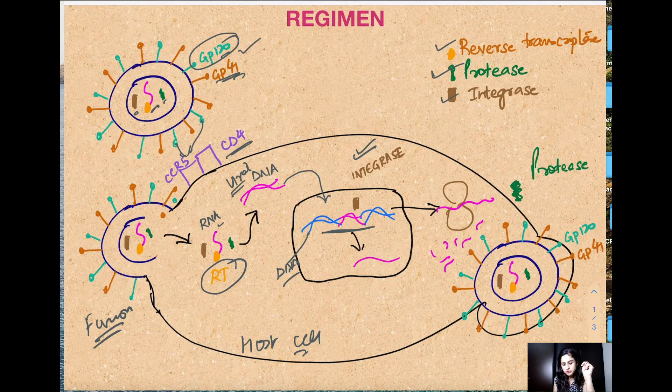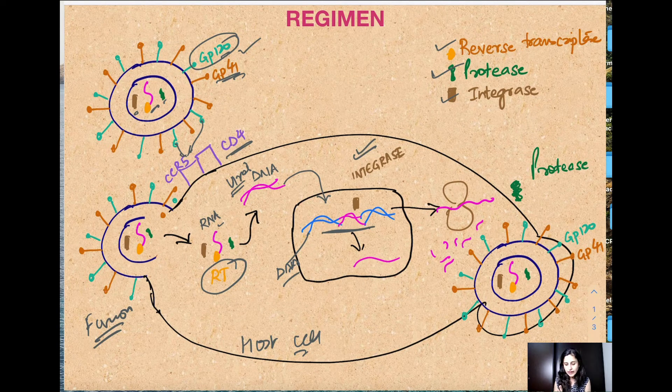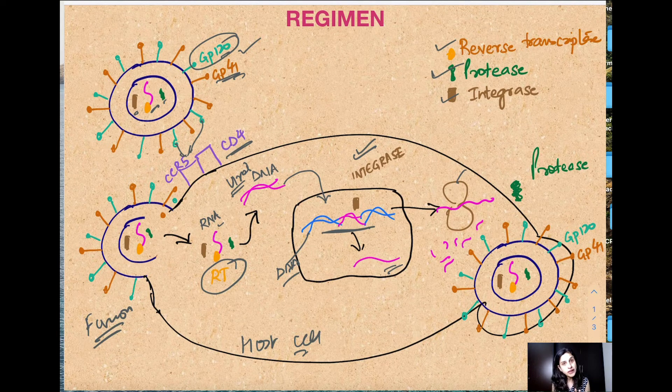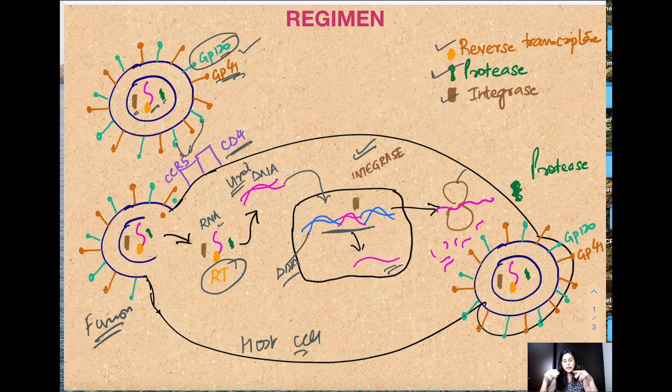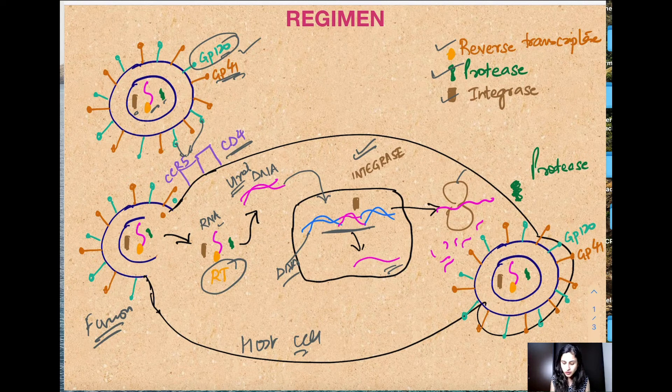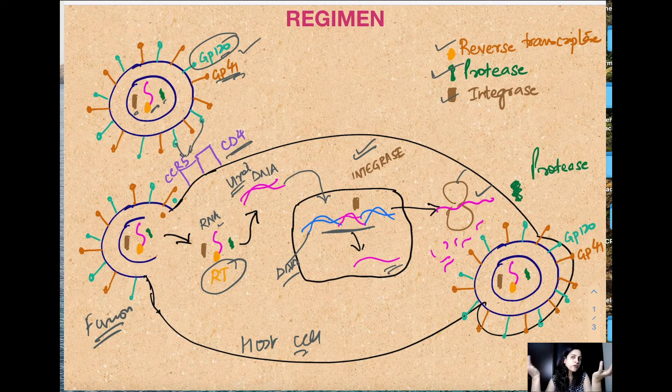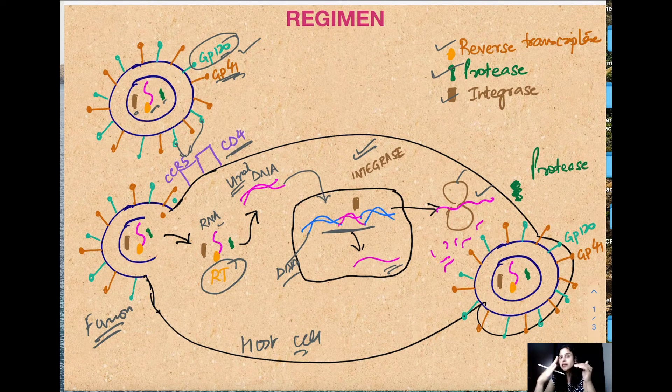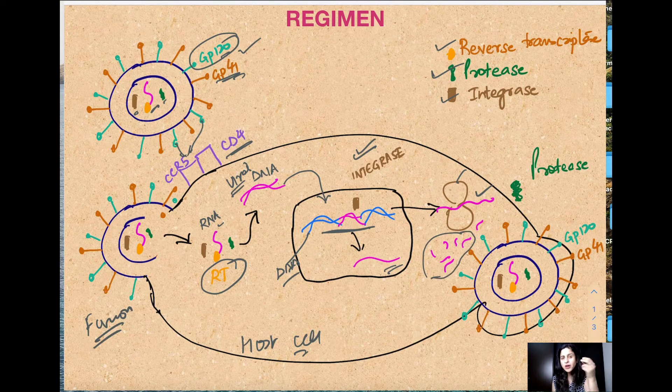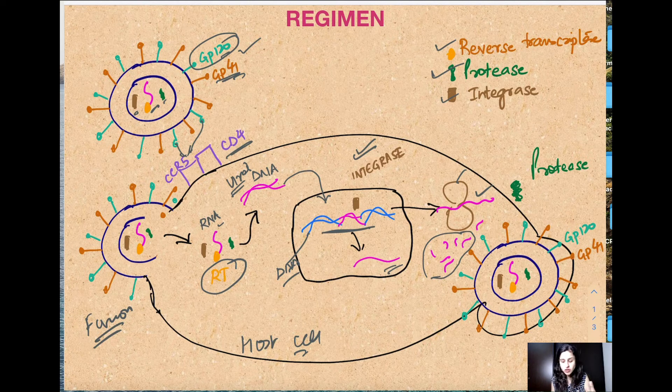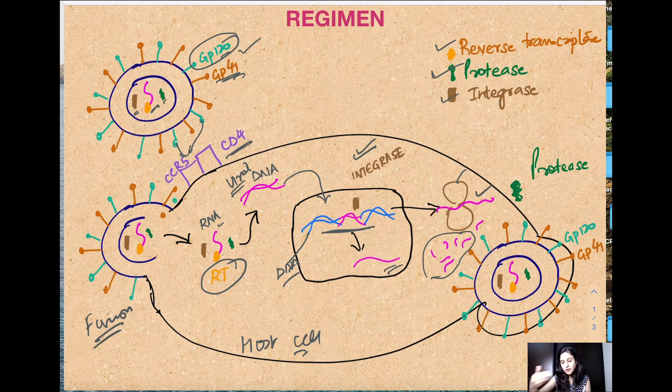After this, normal more RNA copies are formed. This also utilizes the host ribosome to form various proteins. These proteins that are formed are big poly proteins. These poly proteins are of no use to the virus. What they need to do is cut it down into small pieces.